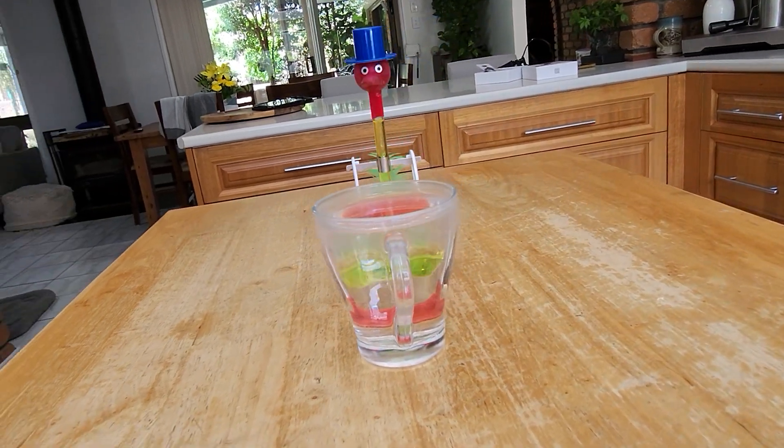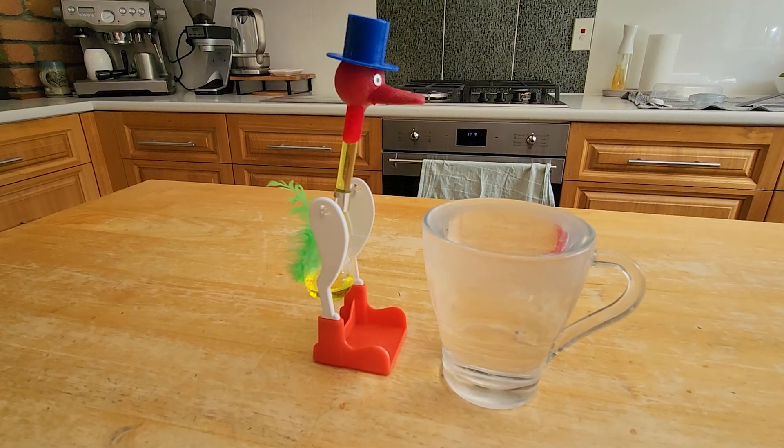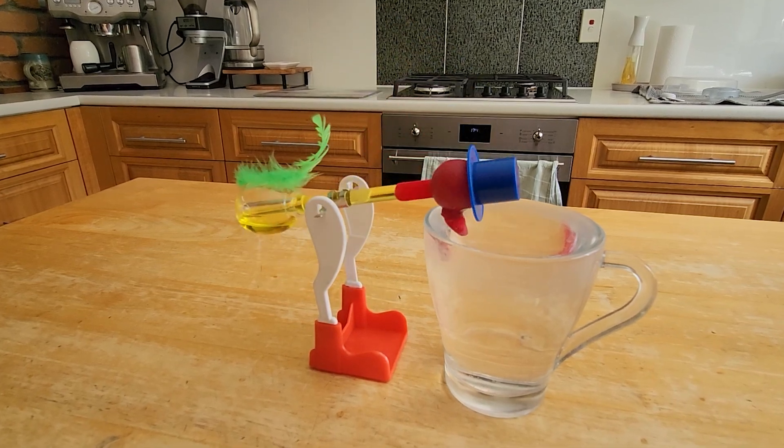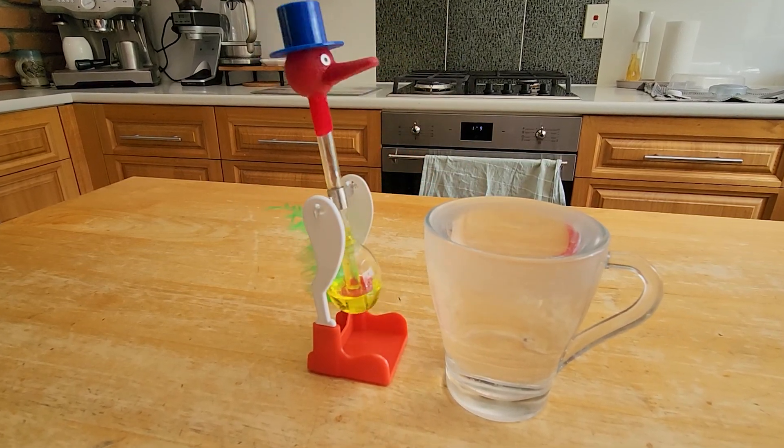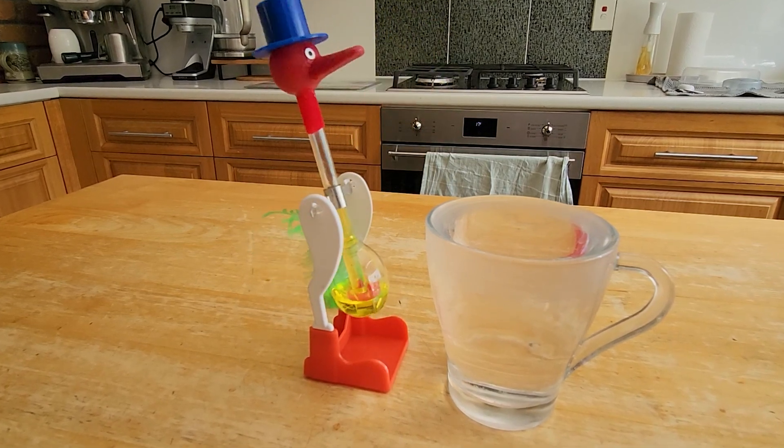So what happens is that when Mr. Dippy Sippy felt beak is dipped into water, it becomes wet. And then a very strange thing begins to occur. The fluid in the body begins to rise upward into Mr. Dippy Sippy's head until his head fills with liquid.